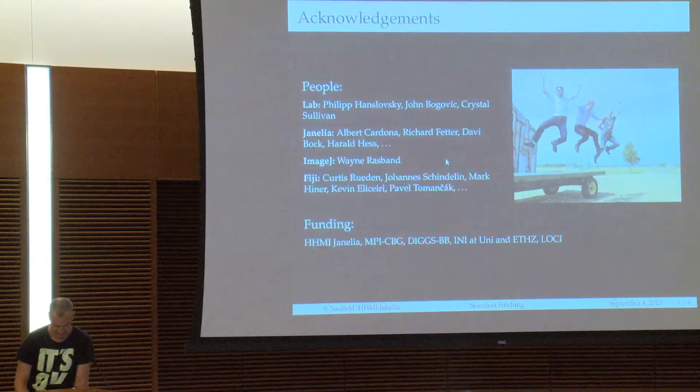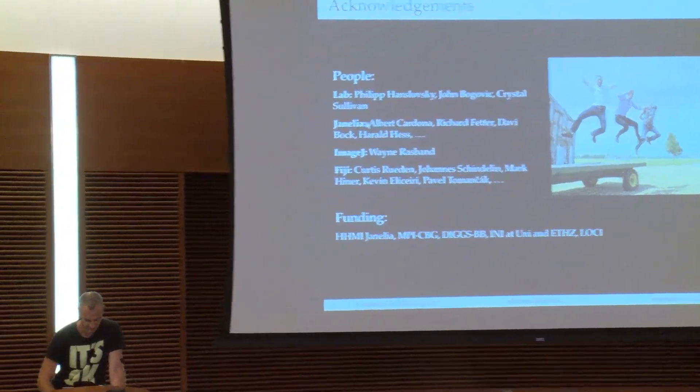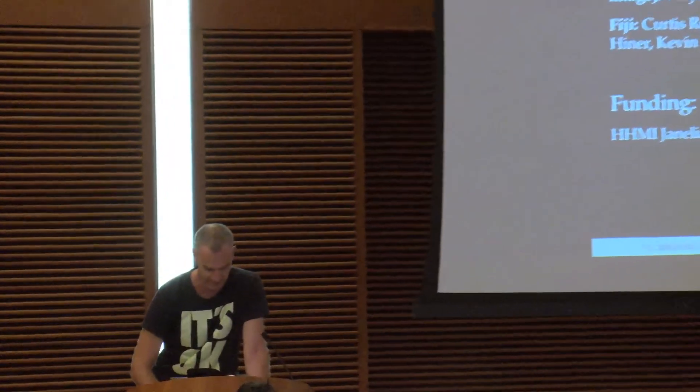To thank a few people: first my lab — Philip Hanslowski, who helped implement it, and John Bogovic, who we heard talking later, and Crystal Sullivan who is organizing us. And then at Janelia, the labs of Albert, Rick Federer, David Bock, and Tarotessio generated the data. Wayne Rasband for making ImageJ. And the whole Fiji team including Curtis, Johannes, Mark, Heiner, Kevin, and Pavel for having Fiji run. And for funding, Janelia, the Max Planck Institute, and all the rest of us involved in the Fiji project.